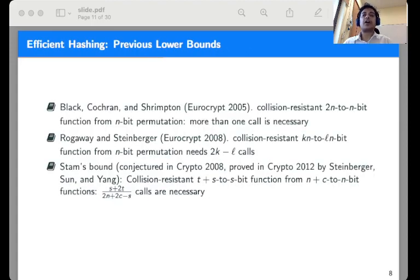In Eurocrypt 2005, Black, Cochran, and Shrimpton proved that to construct a 2n to n-bit collision-resistant function from n-bit permutations, more than one call to the permutation is necessary. Rogaway and Steinberger generalized this result to show that any kl to ln-bit function from permutations need to make 2k minus l many queries to the n-bit permutations.